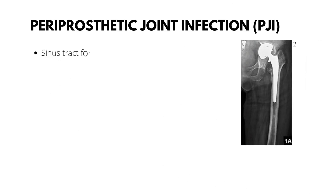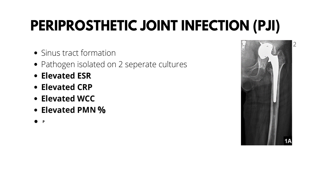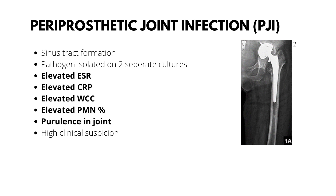What is periprosthetic joint infection? According to the Musculoskeletal Infection Society, it is when there is a sinus tract communicating with the prosthesis, or if a pathogen is isolated from at least two separate tissue cultures or fluid samples from the joint, or if four of the following criteria exist: